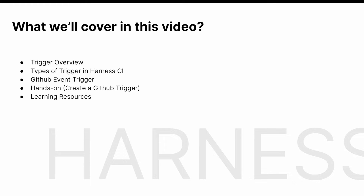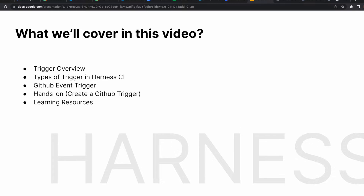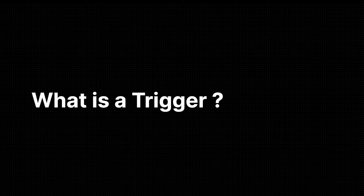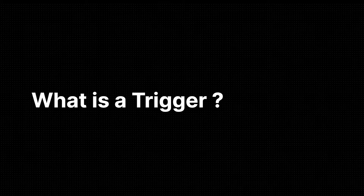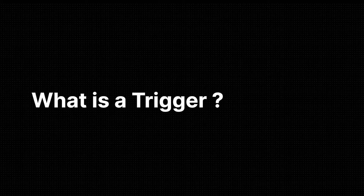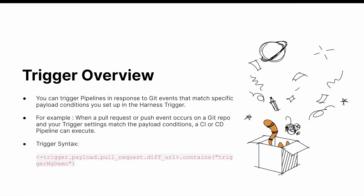Let's understand what a trigger is. A trigger in Harness is used to initiate the execution of a pipeline. Harness uses your account ID to map incoming events from GitHub, takes the incoming event and compares it to all the triggers in the account. So you can trigger pipelines and respond to Git events that match specific payload conditions that you set up in the Harness trigger.